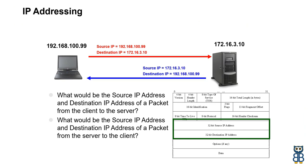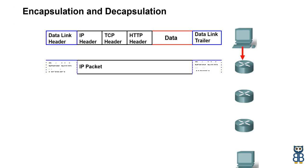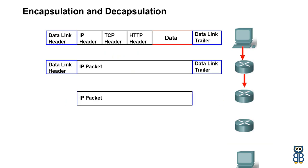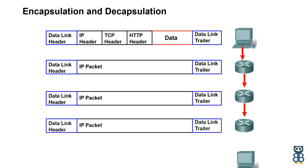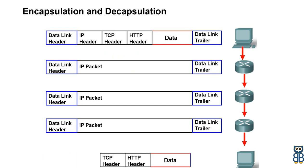Now let's understand encapsulation and decapsulation. It is similar to when you deliver something to someone — you must wrap the parcel and paste a label on the box with information like name, address, and brand tag. Similarly, when the network layer receives a segment from the upper layer, it encapsulates the segment with some information and hands over this packet to the data link layer. I will cover the IP header in a separate video. This method is generally called encapsulation.